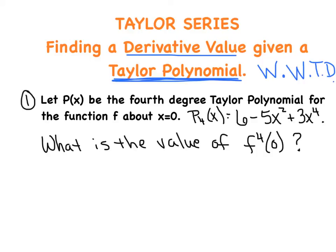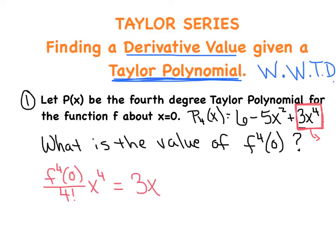Notice I'm not asking for the coefficient — if you just want the coefficient of the fourth degree term, you look up and say it's a three. But we're specifically asking for the value of the fourth derivative at zero. What would Taylor do? Taylor says if you want that term, it's going to be the fourth derivative evaluated at zero, divided by four factorial, times X to the fourth. I'm going to set that equal to 3X to the fourth, which is the finished product they gave me.